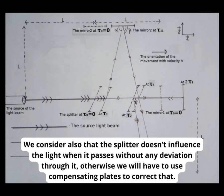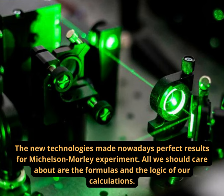We consider also that the splitter doesn't influence the light when it passes without any deviation through it, otherwise we will have to use compensating plates to correct that. The new technologies made nowadays perfect results for Michelson-Morley experiment. All we should care about are the formulas and the logic of our calculations.